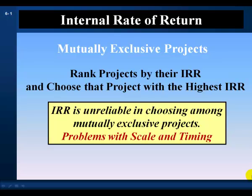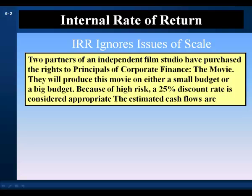Now let's examine the problems of the IRR rule particular to mutually exclusive projects. When choosing among mutually exclusive projects, the IRR rule ranks each project by its IRR and chooses the project with the highest IRR. But the IRR is unreliable in choosing among mutually exclusive projects — it has problems with the scale of the projects and the timing of the cash flow streams. The IRR is unreliable when ranking projects of different scale because it ignores issues of scale.